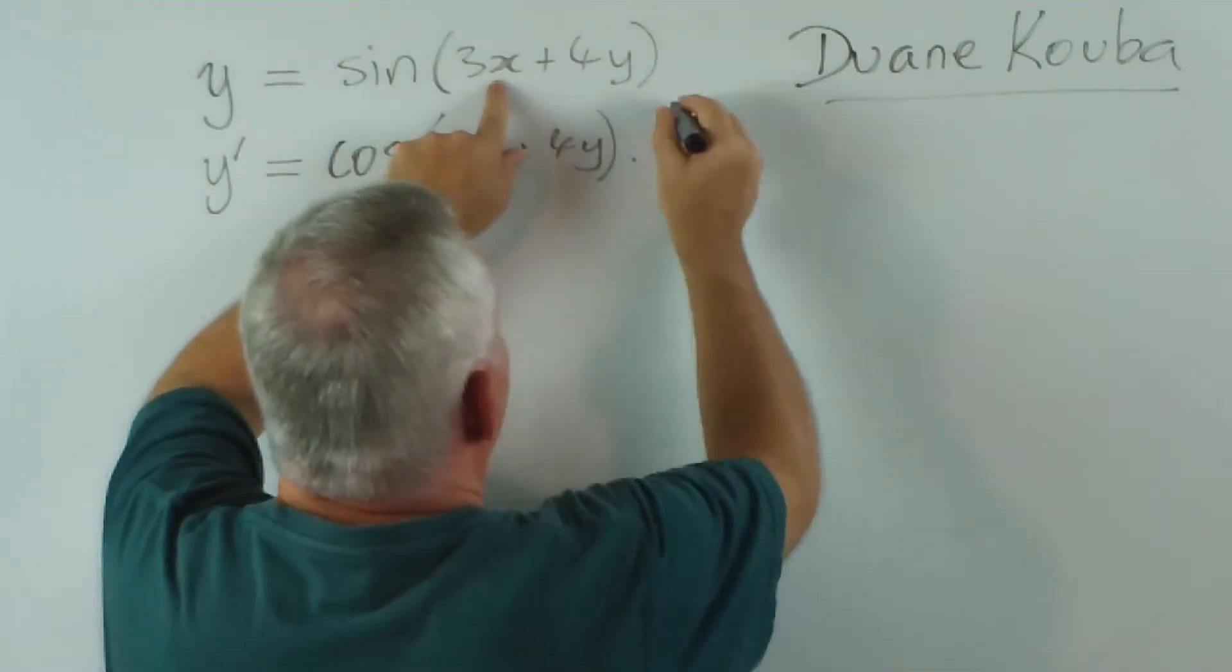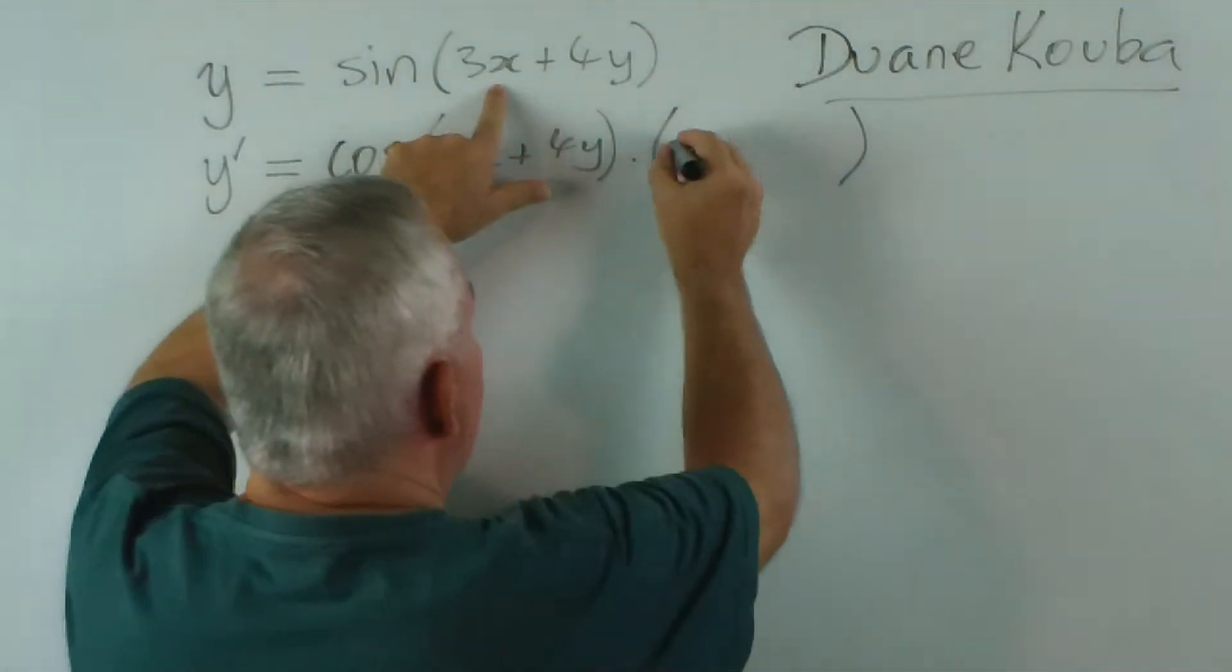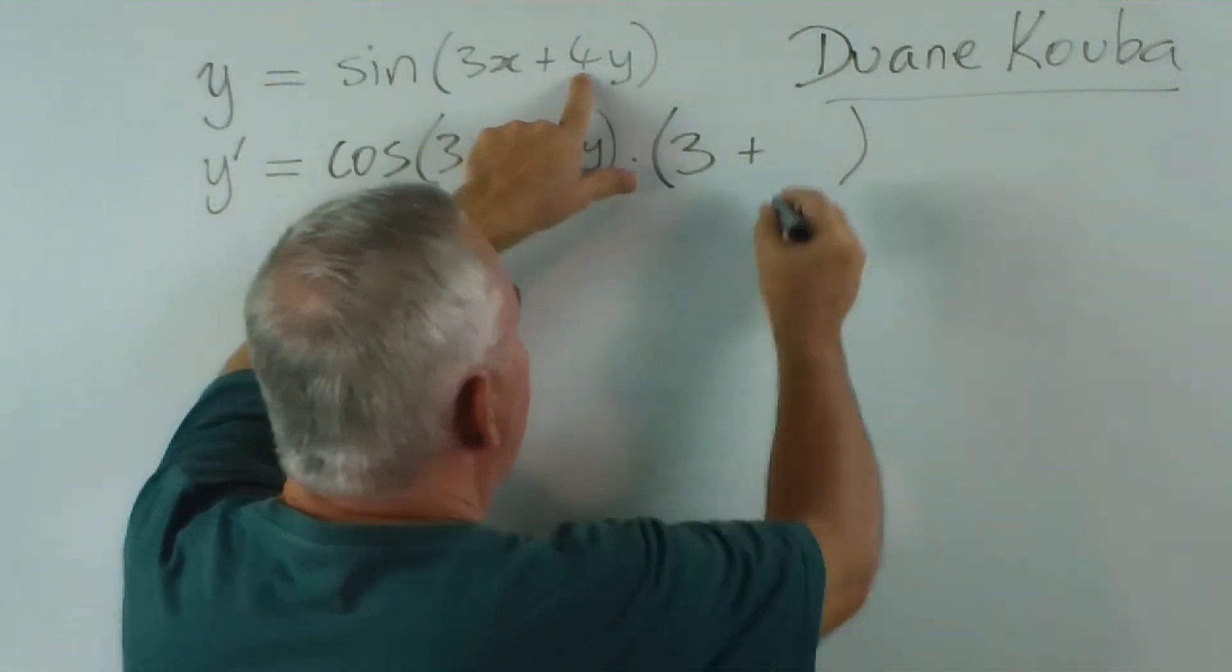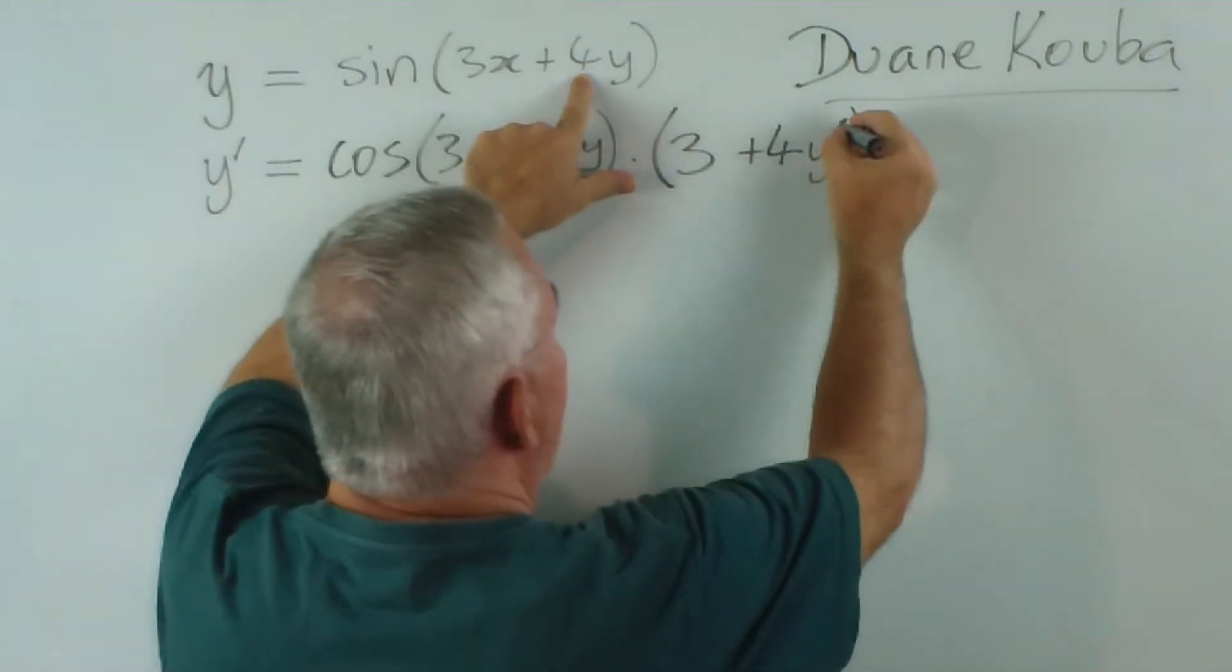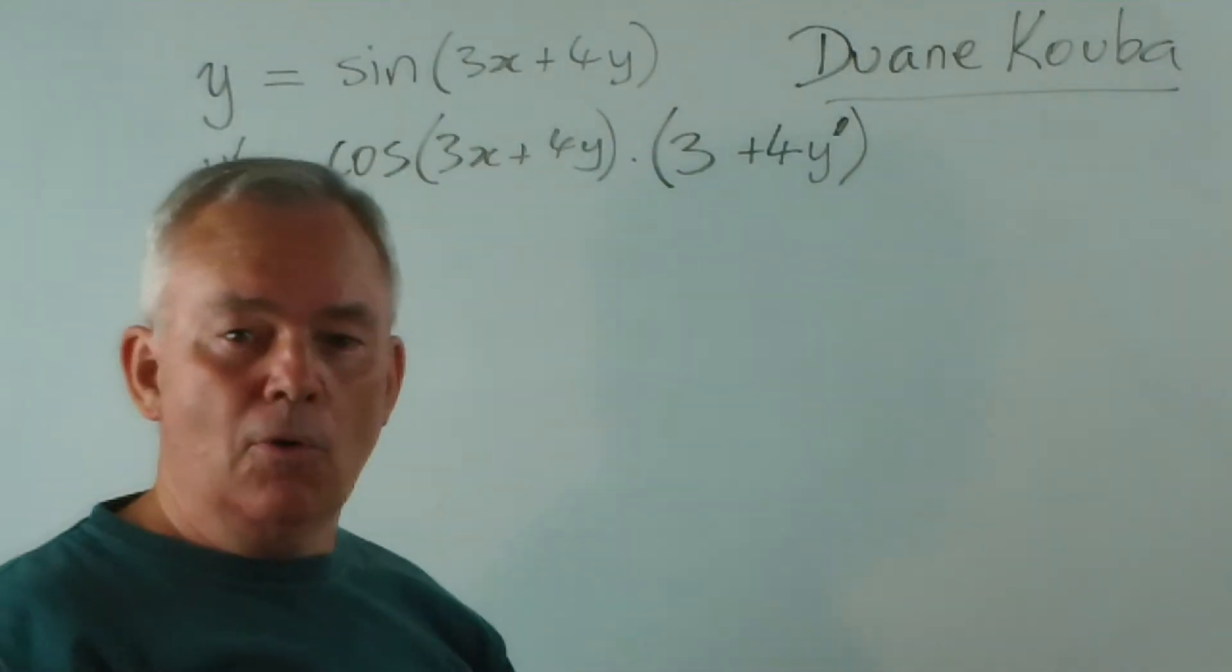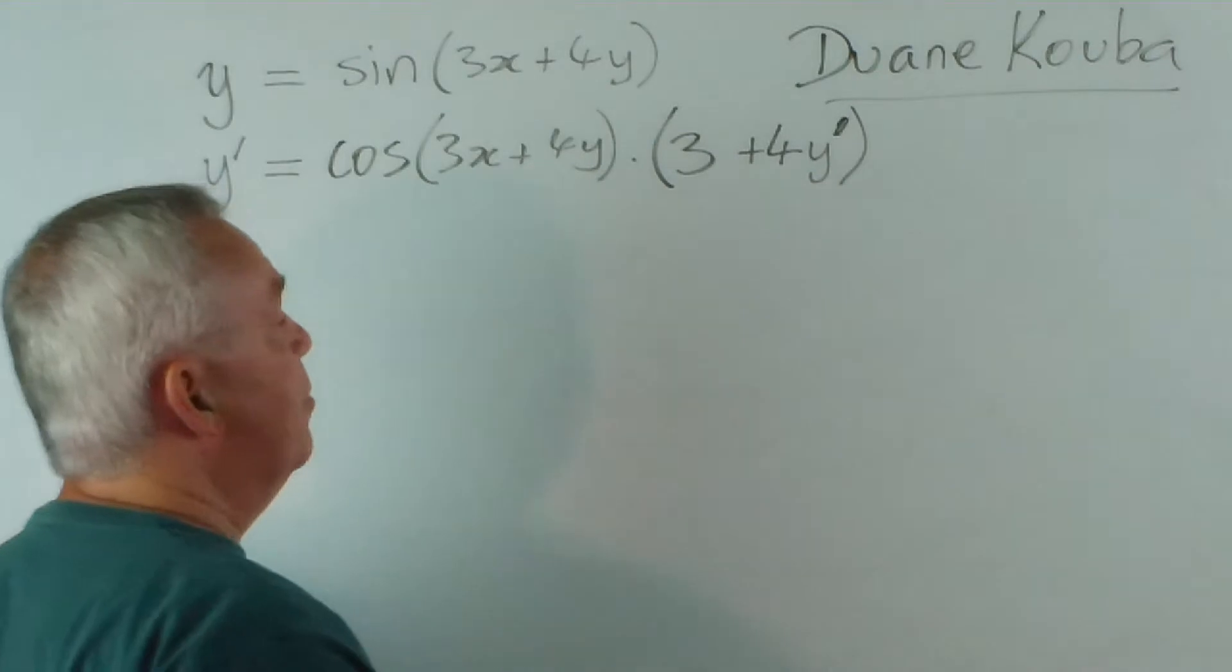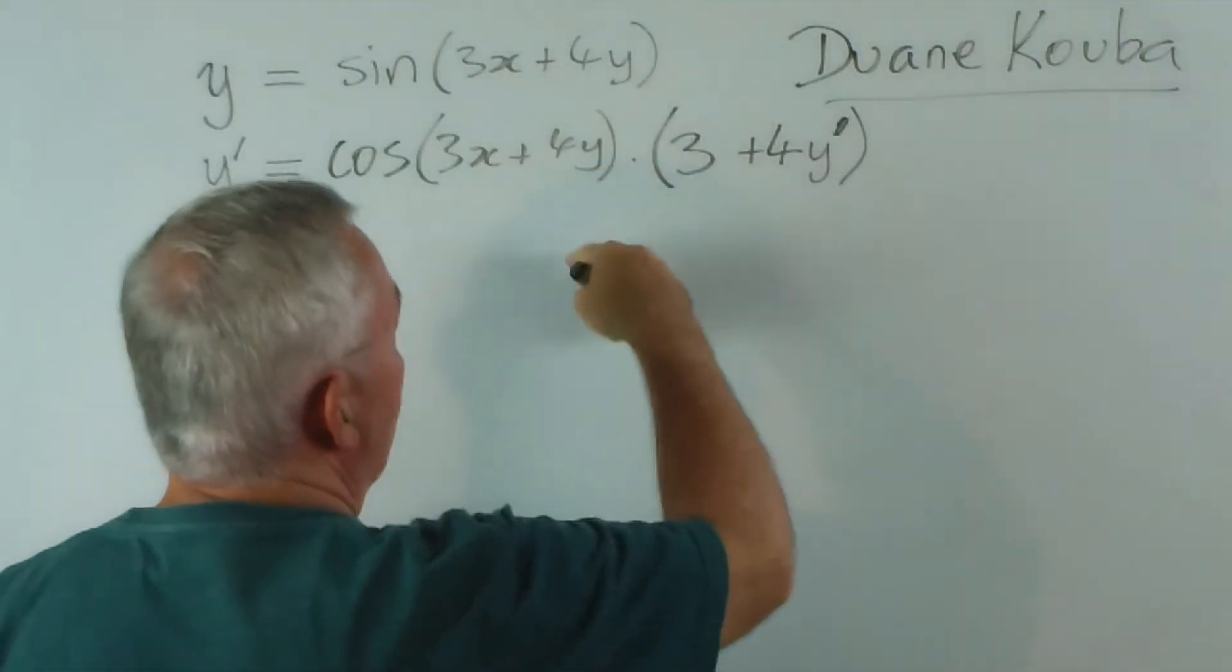It's going to be an expression, two terms. The derivative of 3x is 3, and the derivative of 4y is 4y dash, if you like. The derivative of 4y is just 4, and then because y is inside the function, the derivative of that using the chain is dy dx, which is y dash. So it's 4y dash.